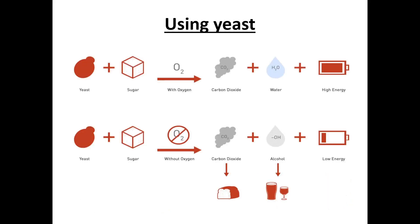Using yeast — we all know yeast from anaerobic respiration. It's used to make bread. Yeast plus sugar with oxygen gives carbon dioxide, water, and higher energy. Yeast and sugar without oxygen gives carbon dioxide, alcohol, and low energy. So carbon dioxide produces bread, and alcohol can be used for alcohol products from yeast.